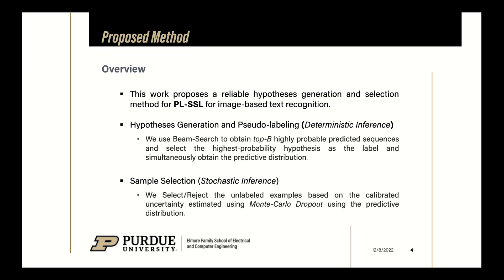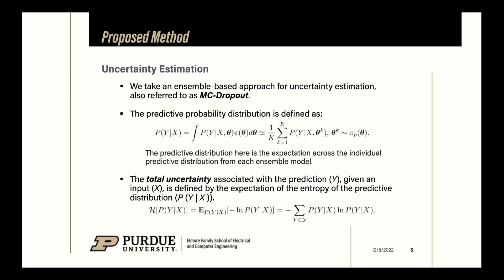For selecting good or potentially correct pseudo-labeled samples, we select or reject the pseudo-labeled samples based on the uncertainty estimated from the predicted distribution using Monte Carlo dropout. More concretely, we take an ensemble-based approach for uncertainty estimation, also referred to as MC dropout in the literature. We create different instances of the trained model by applying dropout to them and then take the expectation of the predicted distribution from each of the instances.